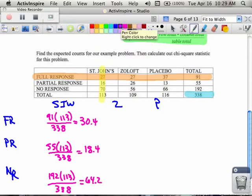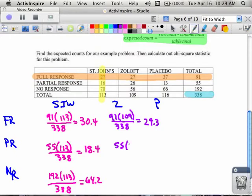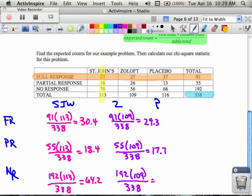For the Zoloft, I'm in the next column now, so it's going to be 109. So then I have 91 times 109 divided by 338 for a grand total of 29.3. And then next I have the 55 times that 109 divided by 338, and that's 17.7. And then I have the 192 for the no response times the 109 for the column, divided by the table total of 338 for a nice large number of 61.9.